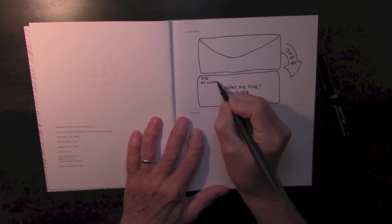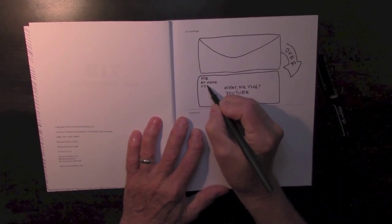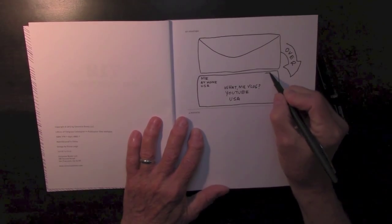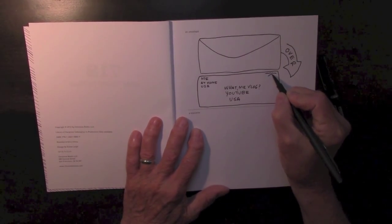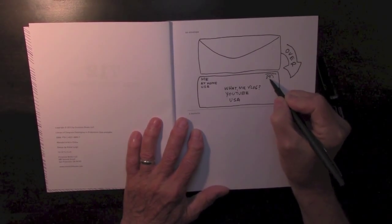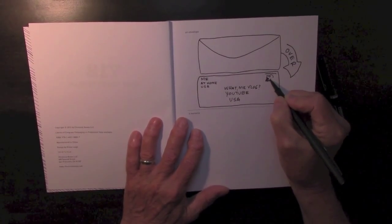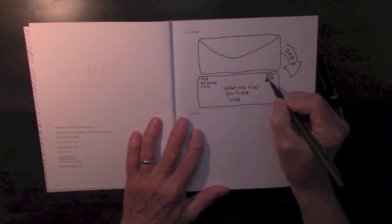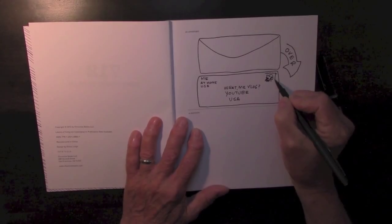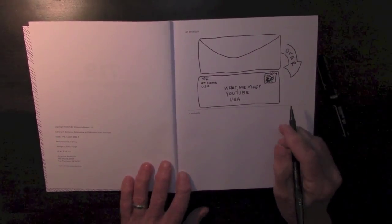And now of course you have to have a stamp, so we need to put a stamp over here, and a stamp usually has some kind of a famous person, and I don't know who the person would be, but most famous people, presidents and that, have a beard. So we'll give them a beard, and there's the stamp, and there we go, an envelope.